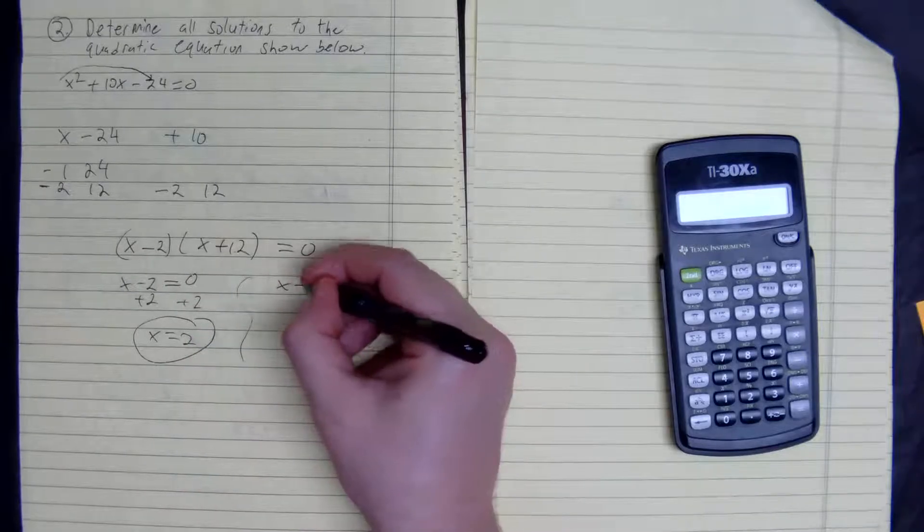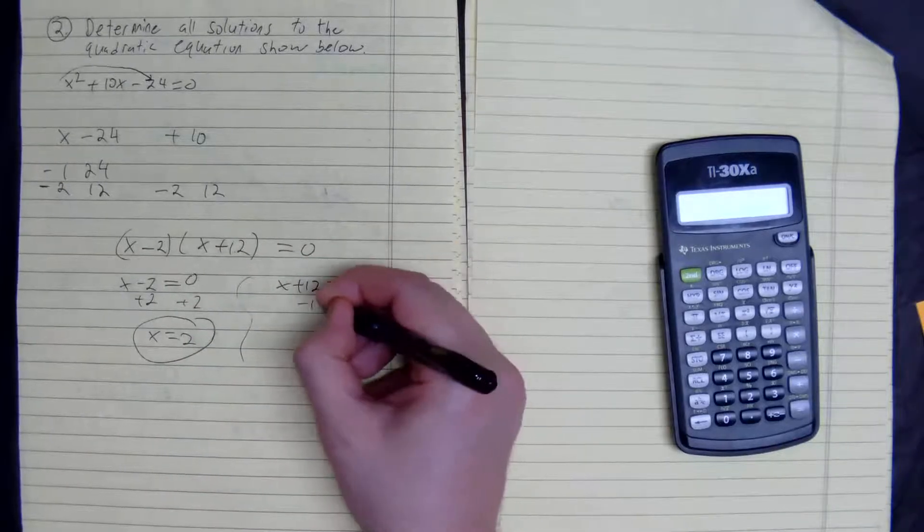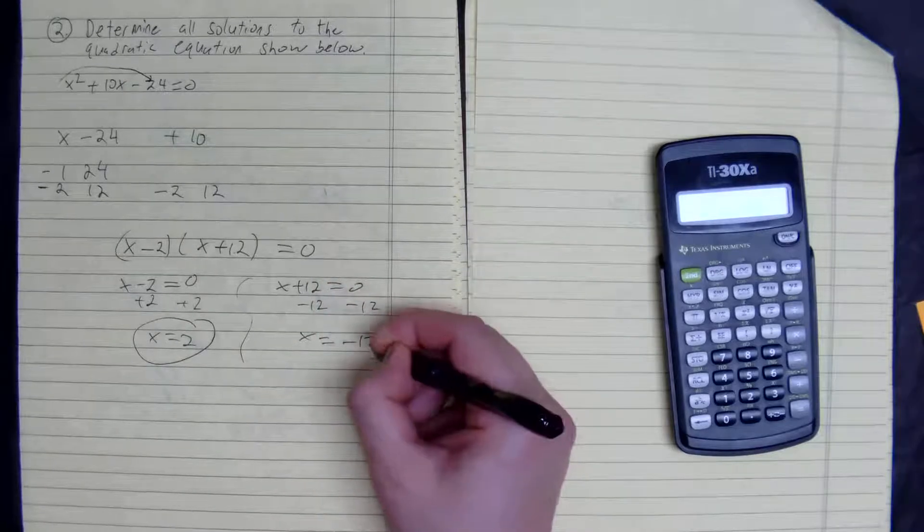Our second answer, X plus 12. Subtract 12 from both sides. We get X equals negative 12.